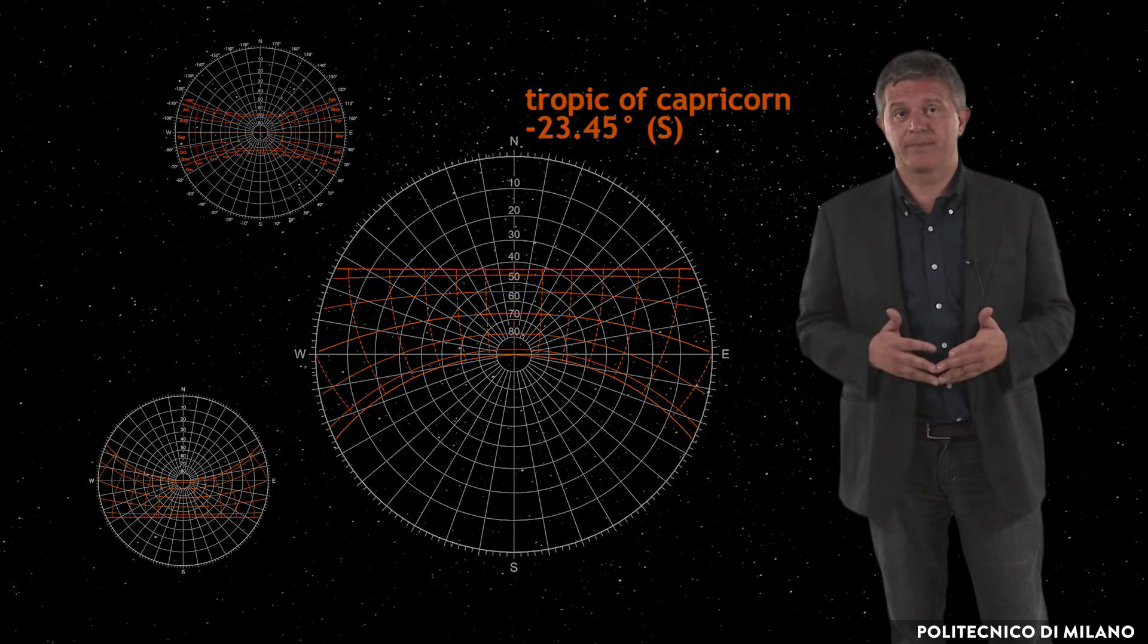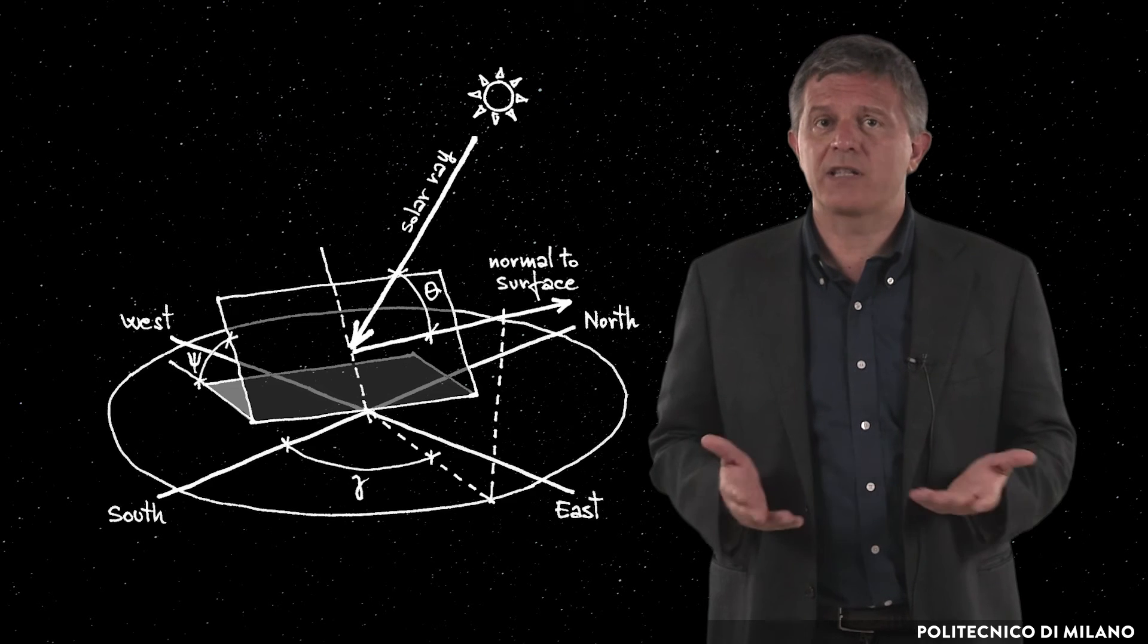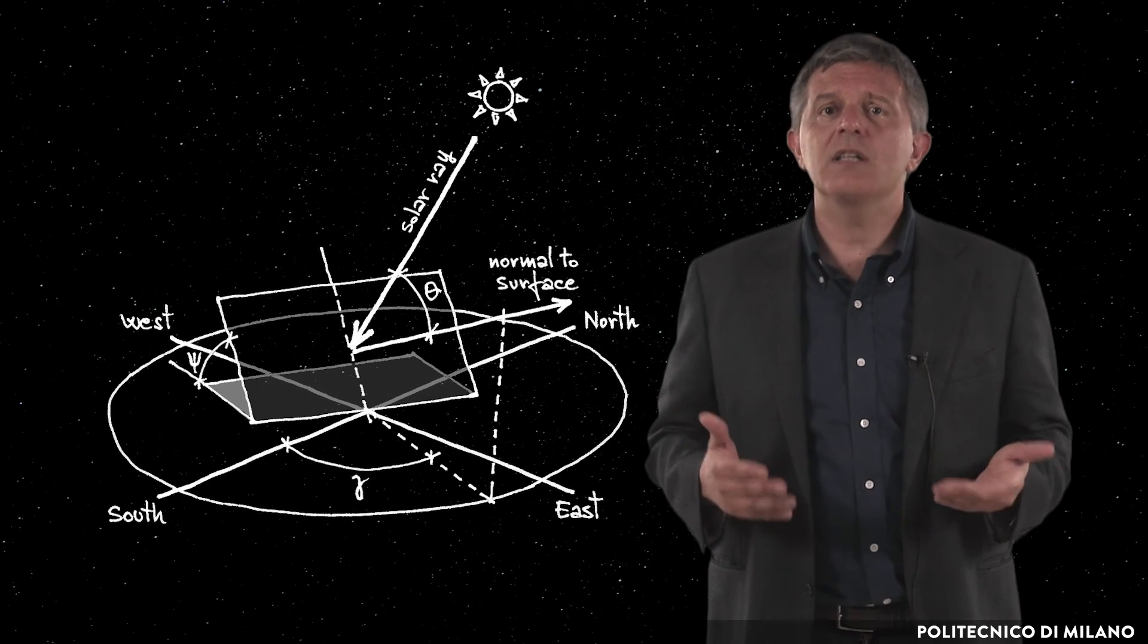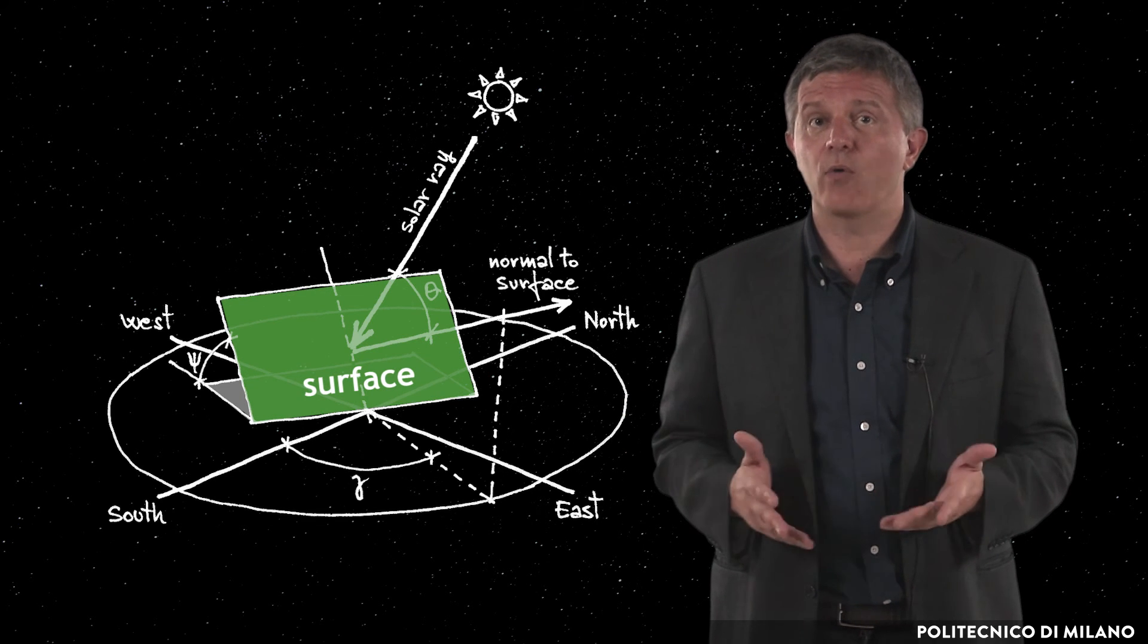In order to study the interaction between a given surface and the Sun, for example the incidence angle of the solar radiation striking a wall, it is useful to define the spatial position of the surface by using the following parameters.